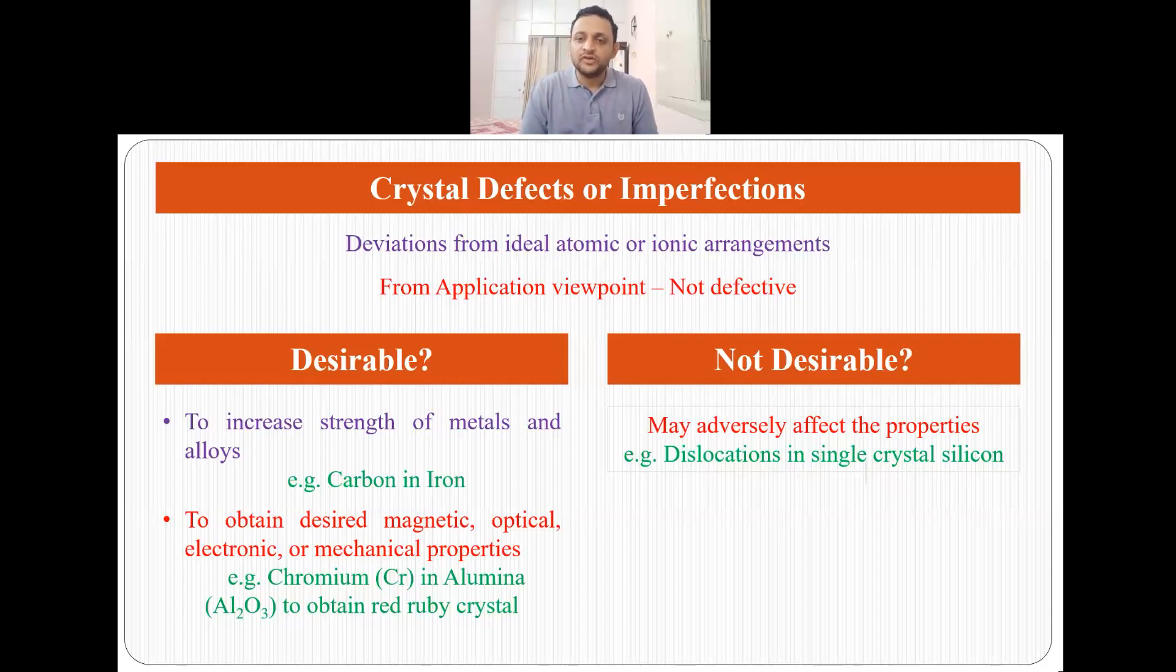These defects may be desirable or not desirable. They are desirable in applications, for example, to increase the strength of metals and alloys. We add carbon in iron to increase its strength. Also, if we want to obtain desired magnetic, optical, electronic, or mechanical properties, then these imperfections are desirable. For example, alumina is transparent, but if we add chromium to it, we obtain a red ruby crystal which is highly desired.